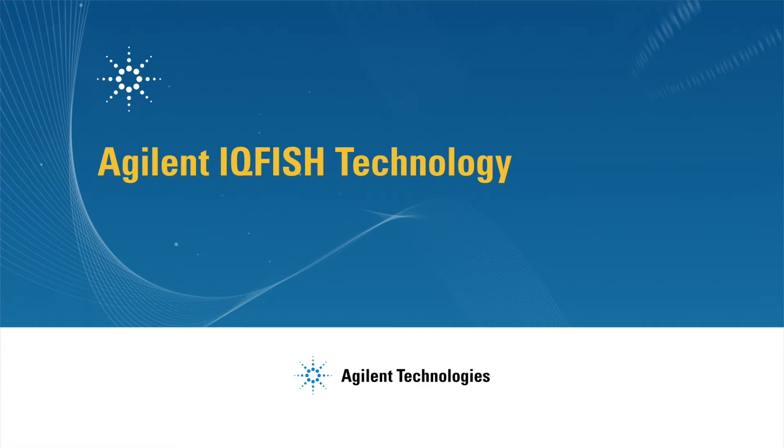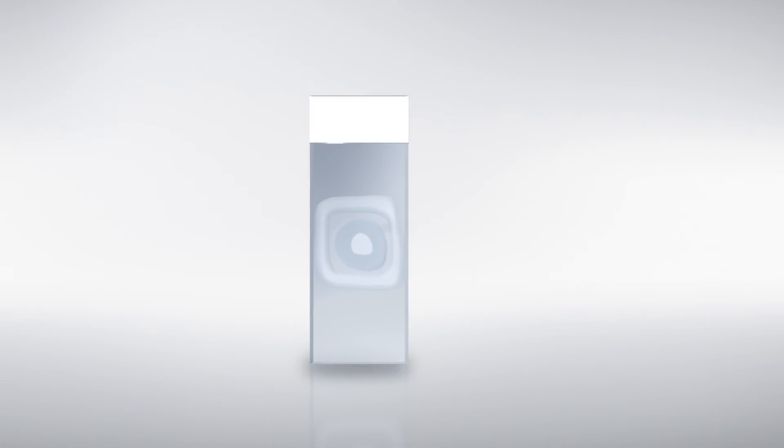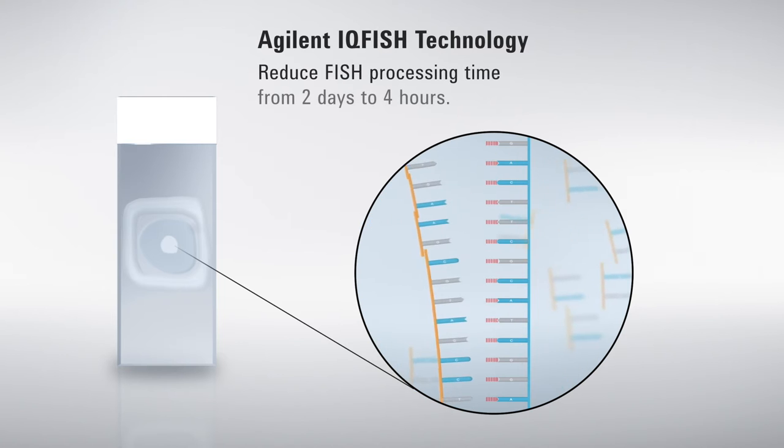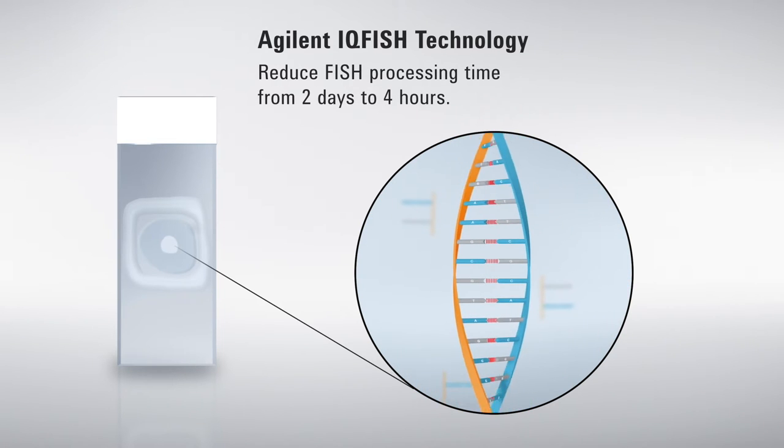With Agilent IQ Fish technology, you can reduce fish processing time on FFPE samples from two days to just four hours without compromising signal strength.